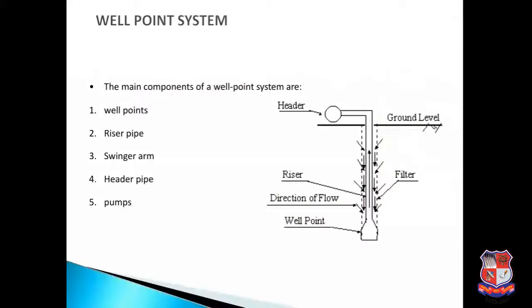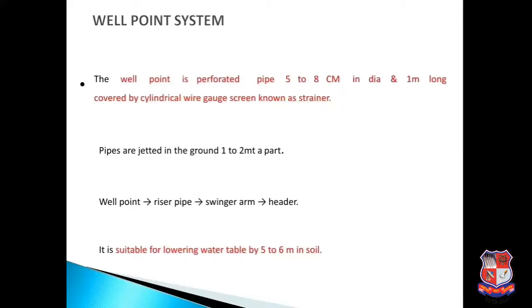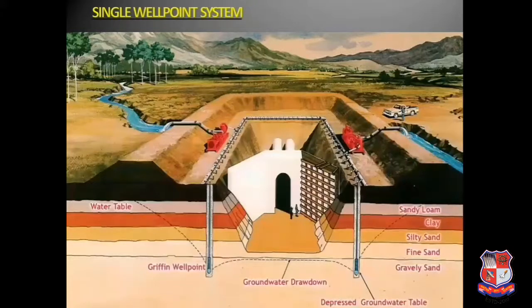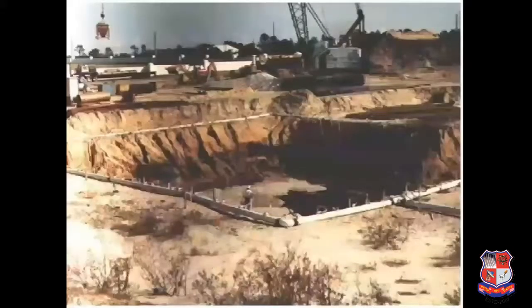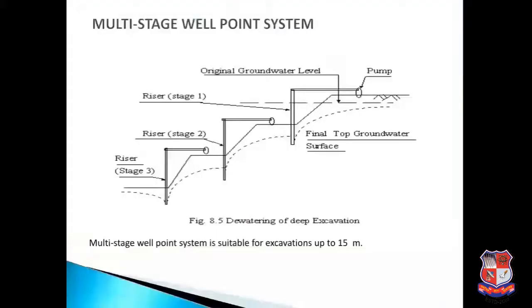Next is the well point system. The main components are well points, riser pipe, swing arm, header pipe, and pumps, as seen in the image. The well point is a perforated pipe 5 to 8 centimeters in diameter and 1 meter long, covered by a cylindrical wire gauze screen. Pipes are jetted into the ground 1 to 2 meters apart, connected in sequence: well point, then riser pipe, then swing arm, then header. It is suitable for lowering the water table by 5 to 6 meters in soil.